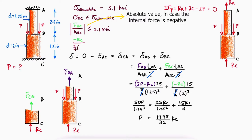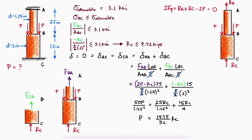Since neither section can be subjected to a normal stress greater than 3.1 KSI, let's begin with the normal stress in section BC. It means that the reaction force at C cannot be greater than 9.72 kips. This means that P cannot be greater than 6 kips.